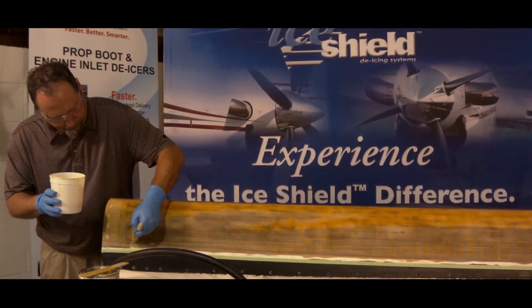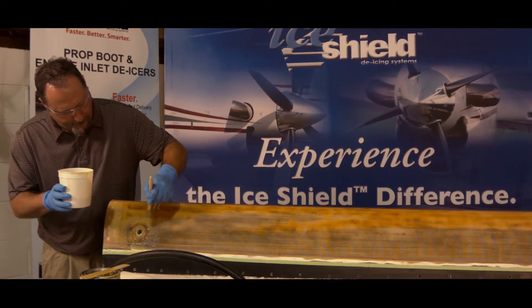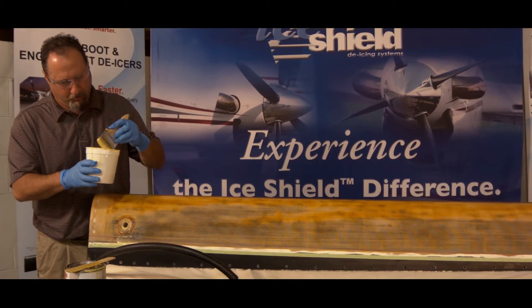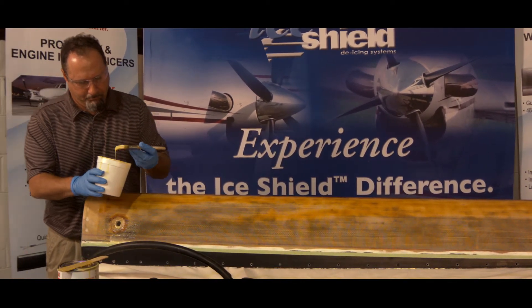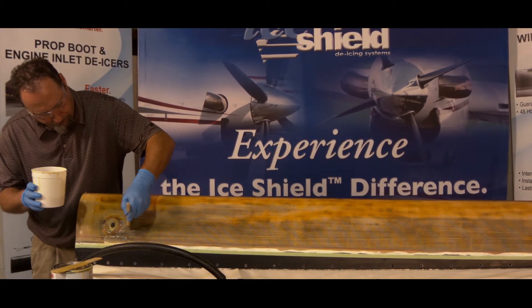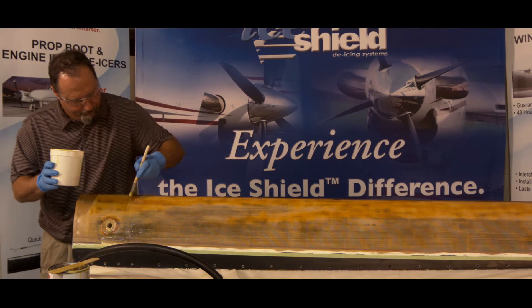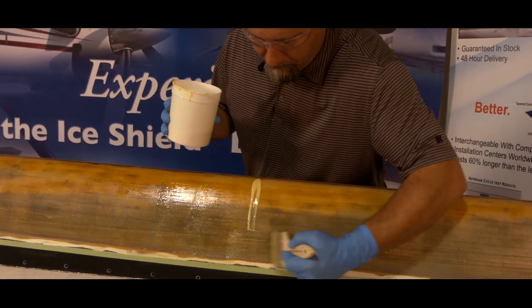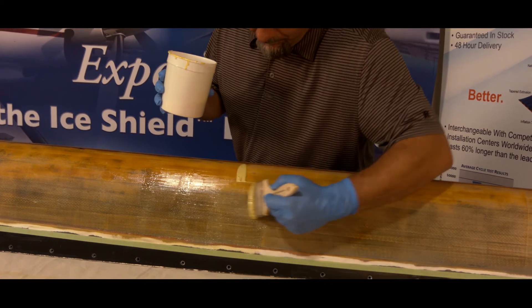Use the same brush stroke method used on the de-icer to apply a thin coat of 1300L onto the leading edge surface. Begin with one stroke vertically followed by multiple tapping horizontal strokes until the brush load of adhesive is spread and repeat until the leading edge is covered with adhesive. Allow to dry a minimum of 1 hour.